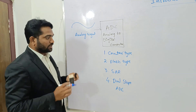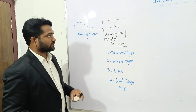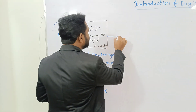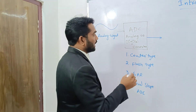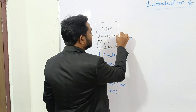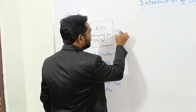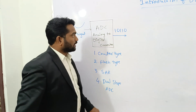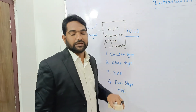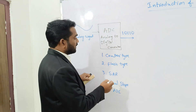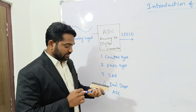By using these four types of analog to digital converters, we are processing an analog signal and converting it into a binary output — ones and zeros. So this analog signal becomes digital. This conversion happens because of these four types of analog to digital converters.